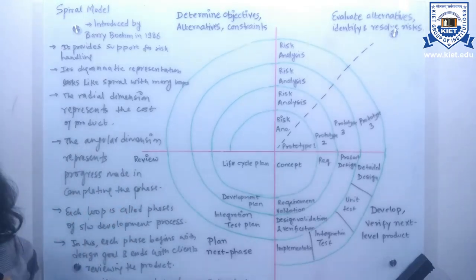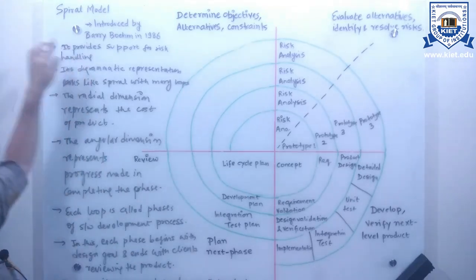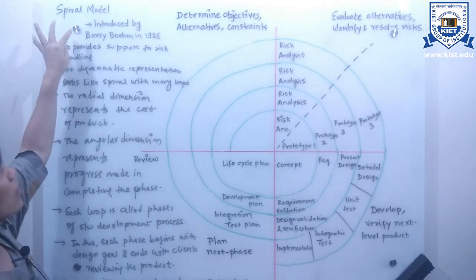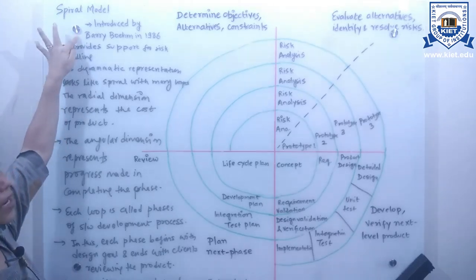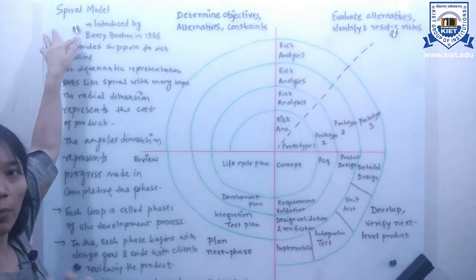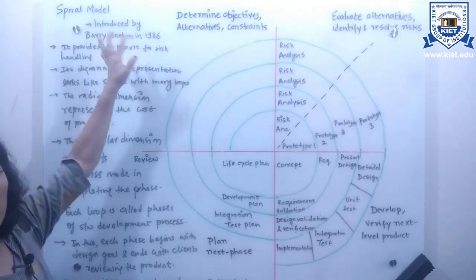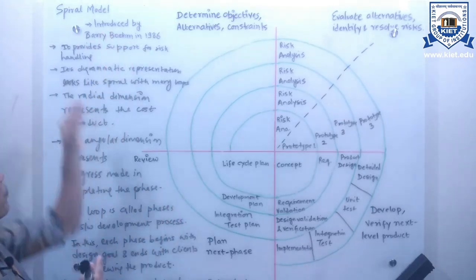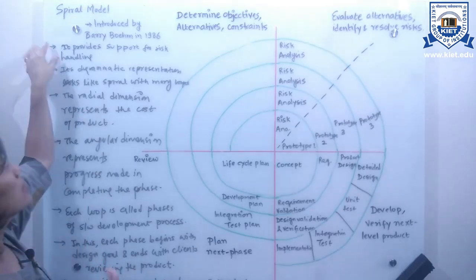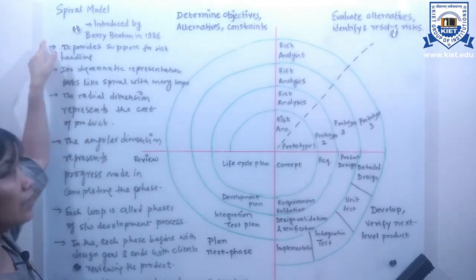The first point is that the spiral model was introduced by Barry Boehm in the year 1986 in his paper. The second point is that it provides support for risk handling.